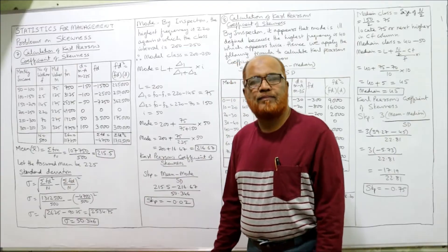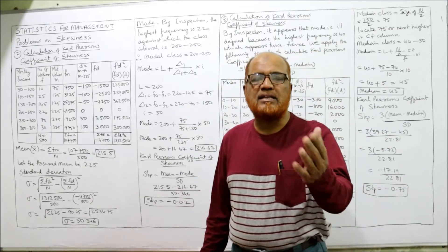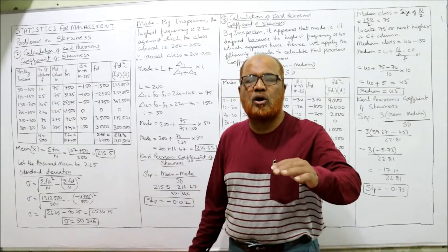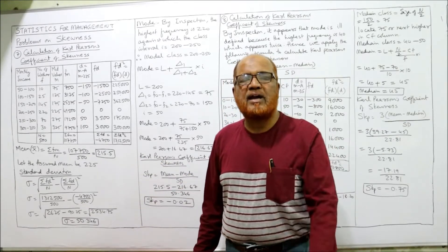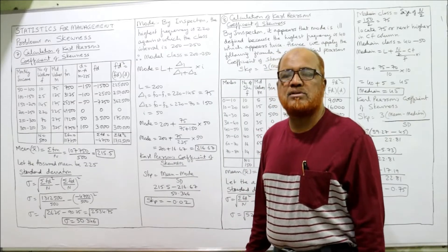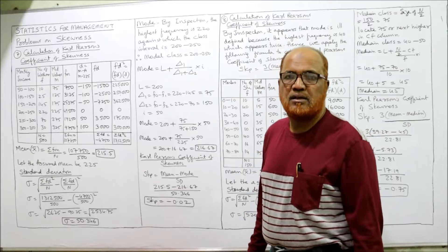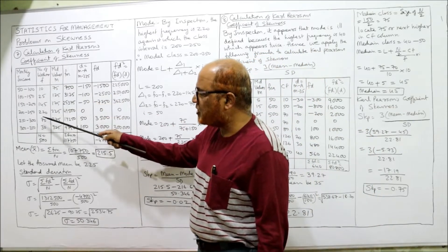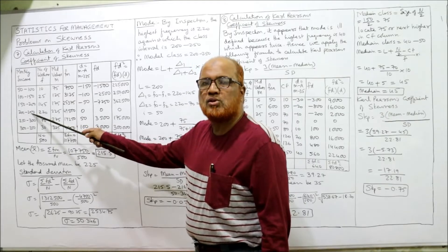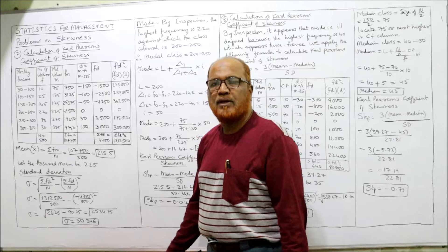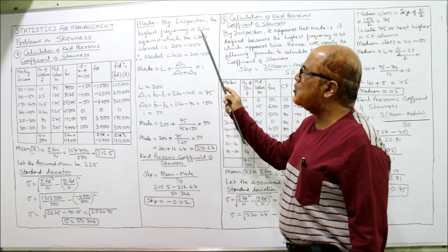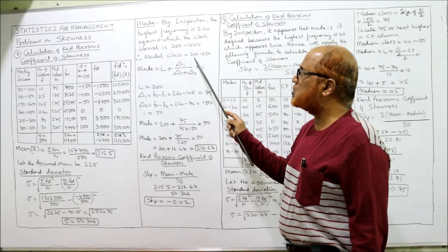Now we calculate the mode. Mode can be found by inspection or by grouping and analysis table. By inspection, the highest frequency is 220, which corresponds to the class 200–250. So the modal class is 200–250.